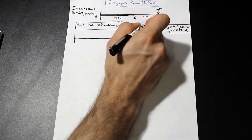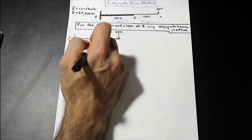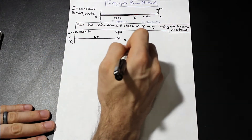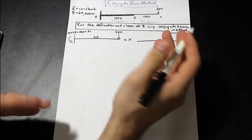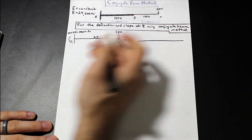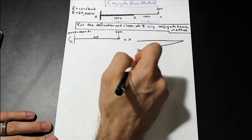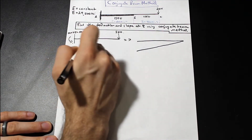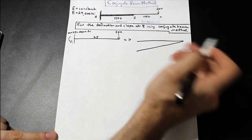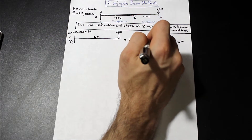We're going to start by drawing the moment diagram on the real beam. As we can see, we have a fixed support and a 20-kip force at the free end with 25 feet in between. So we're going to have a counterclockwise reaction of 20 times 25, which is 500 kip-feet. Because the shear is a constant 20 kips, the moment diagram is linear. At the free end the moment is zero, so the moment diagram goes from negative 500 kip-feet at the fixed end down to zero.